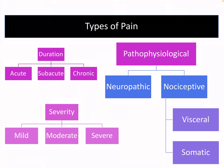Pain can be divided in several different ways. It can be divided based on its duration, and this does come in handy when it comes to treatment, as we treat people differently if they have chronic, acute, or subacute pain. Acute pain is pain that is less than 30 days, subacute pain is between one month and three months, and chronic pain is greater than three months.